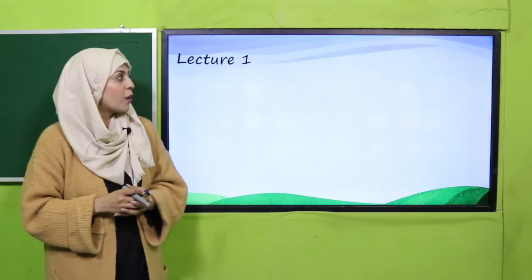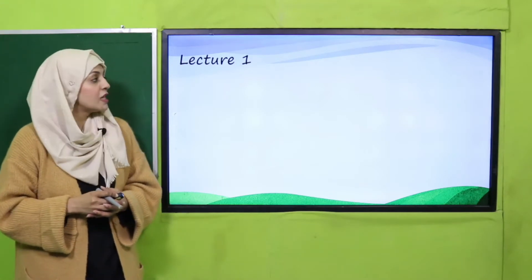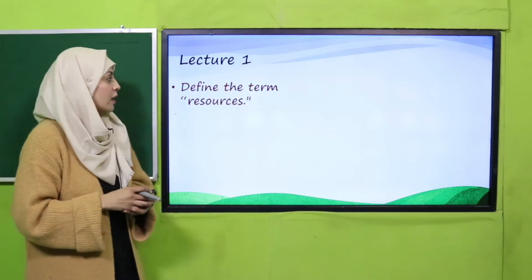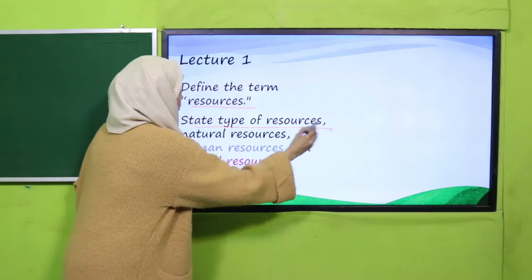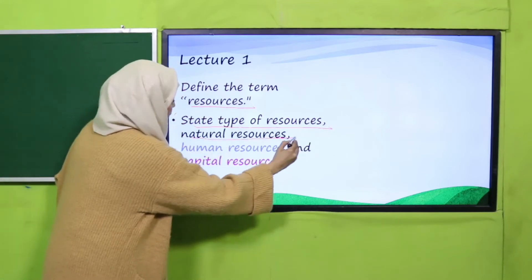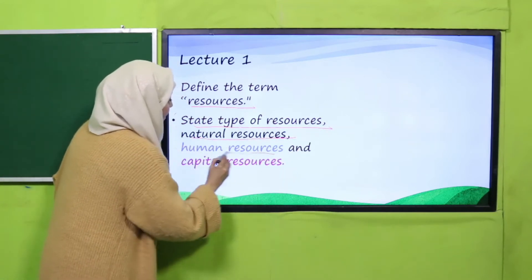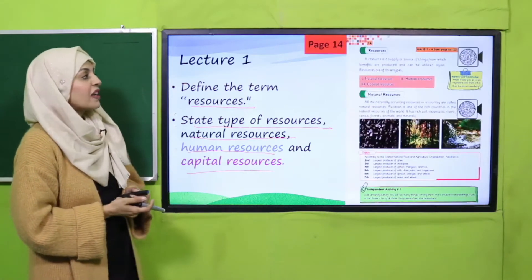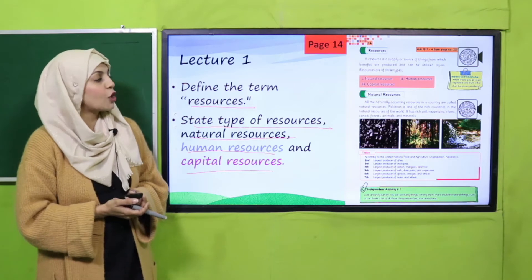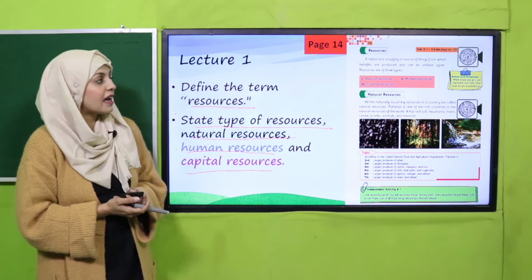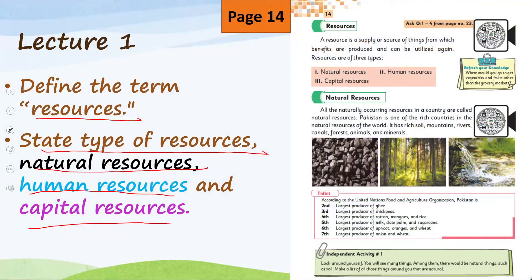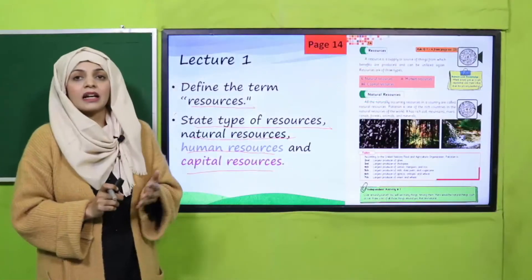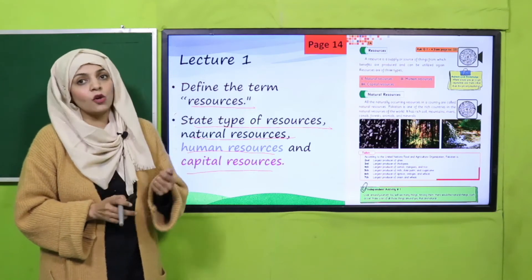From here we will move forward towards lecture number one. In lecture number one we will define the term 'resources' and state the types of resources — natural resources, human resources, and capital resources. Kon konse resources honge: natural resources, human resources, and capital resources. The page included is page number 14, jis ke upar aapko resources ko define kiya gaya hai, aur teen types of resources ko name aur divide karenge.